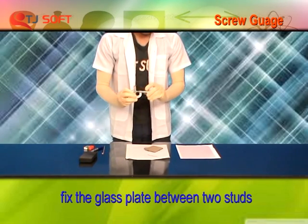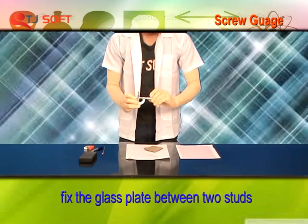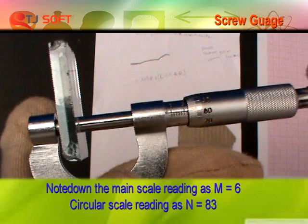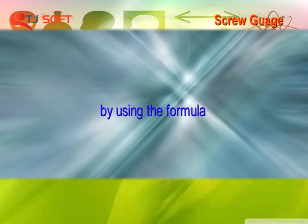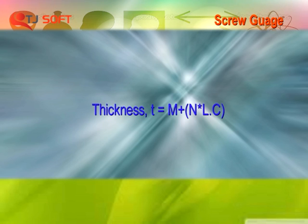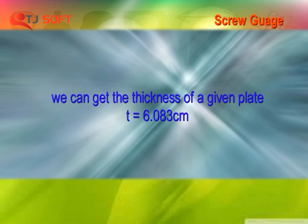Now we are going to measure the thickness of a given glass plate. Fix the glass plate between two studs to measure thickness of it. Note down main scale reading and circular scale reading. Repeat it for two more times to get true values. Tablet all the readings. By using the formula thickness T is equal to M plus N into LC, we can get the thickness of a given plate.